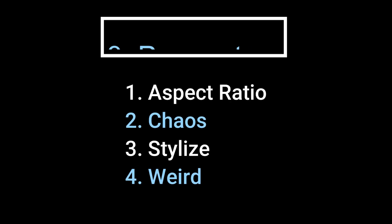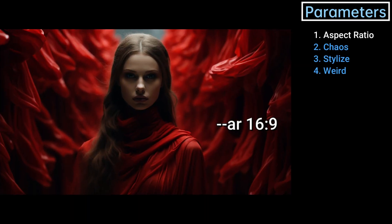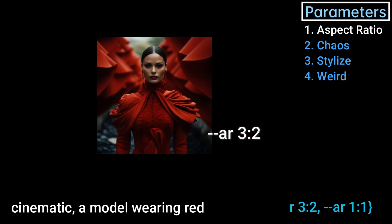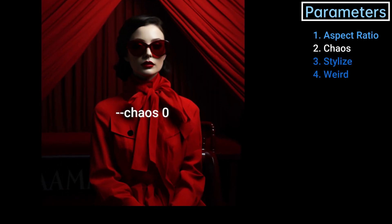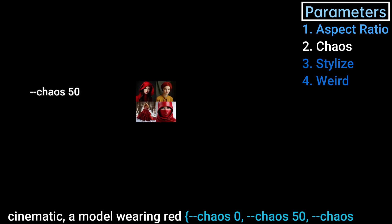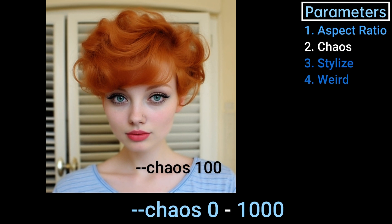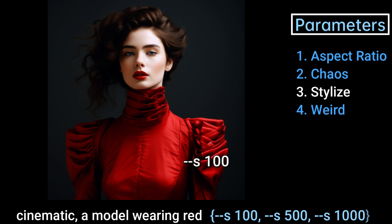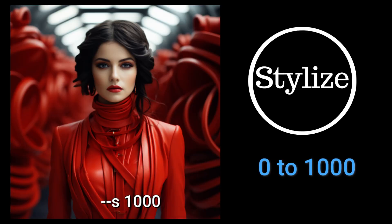Another way to use permutation prompts is to experiment with different parameters. For aspect ratio: curly bracket, then --ar 16:9, --ar 3:2, --ar 1:1, close bracket. For the chaos parameter: curly bracket, --chaos 0, --chaos 50, --chaos 100 — any value between 0 and 1000. For stylization, the format is the same: curly bracket, --s 100, --s 500, --s 1000, close bracket, using any value between 0 and 1000.